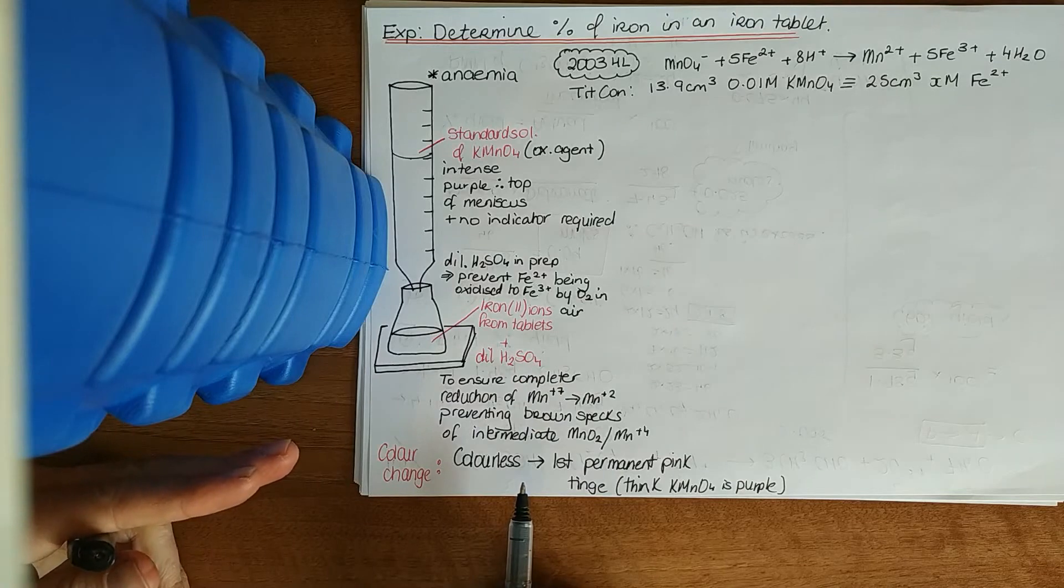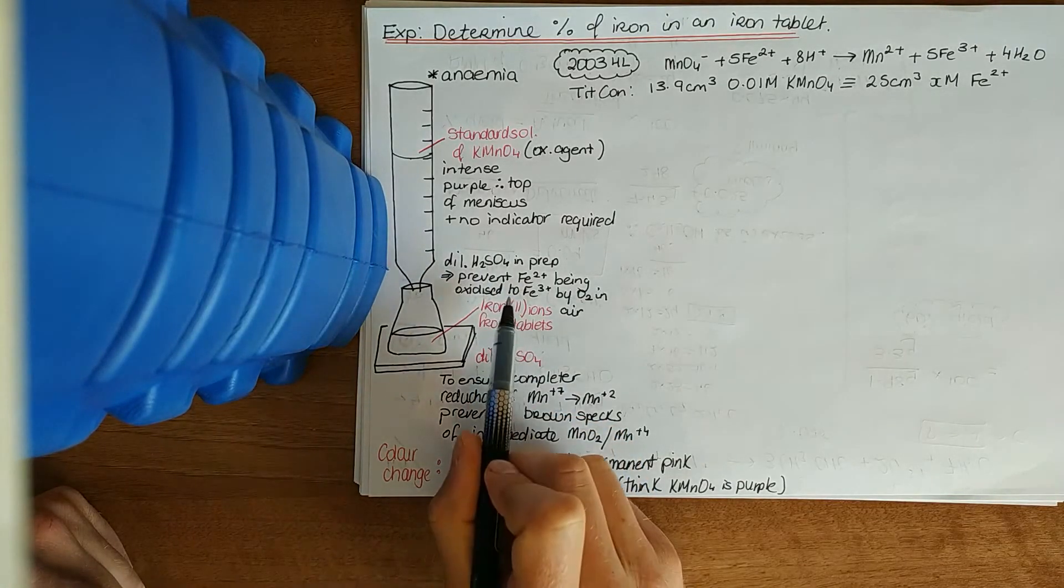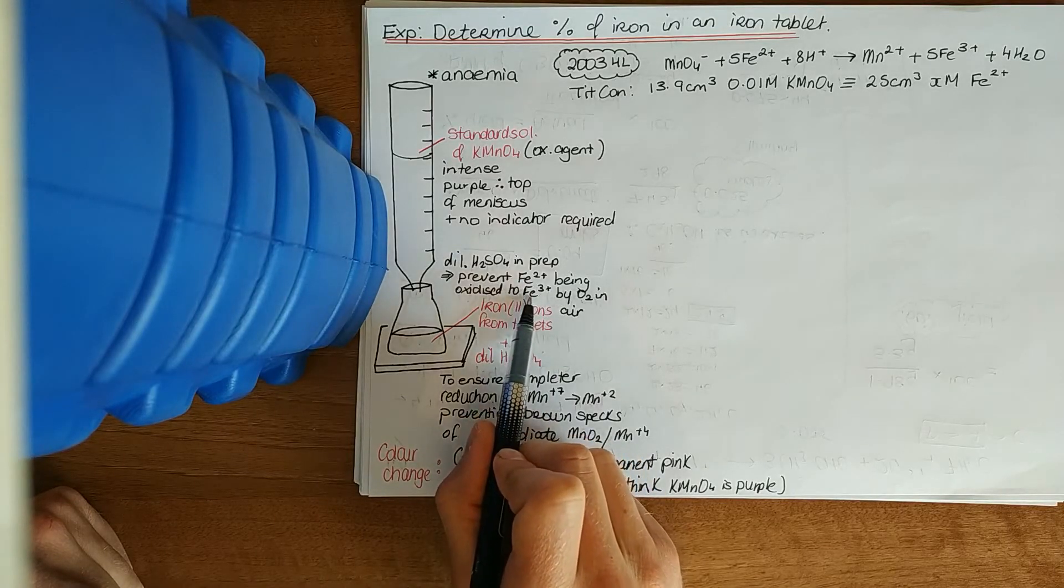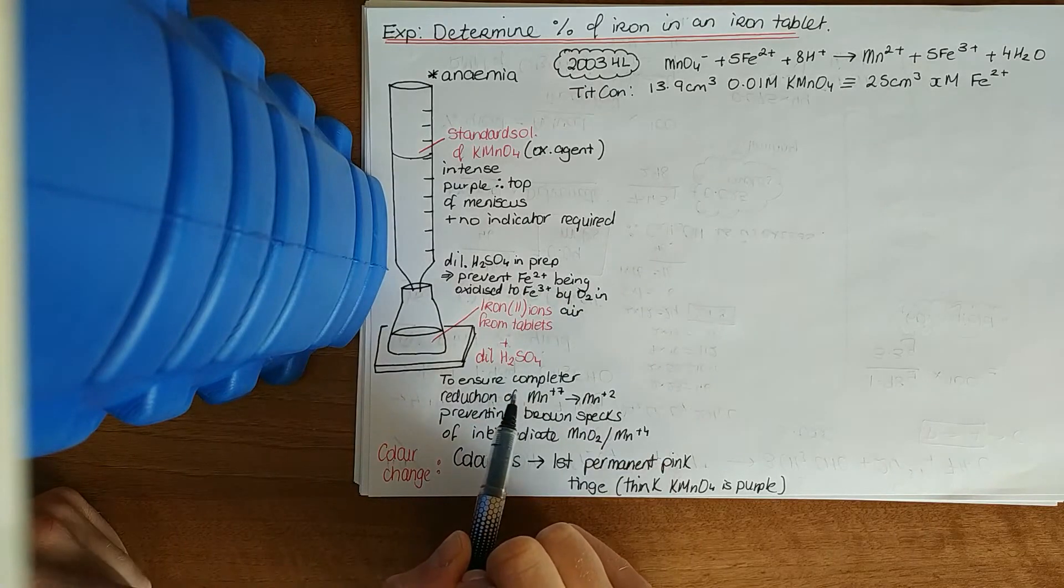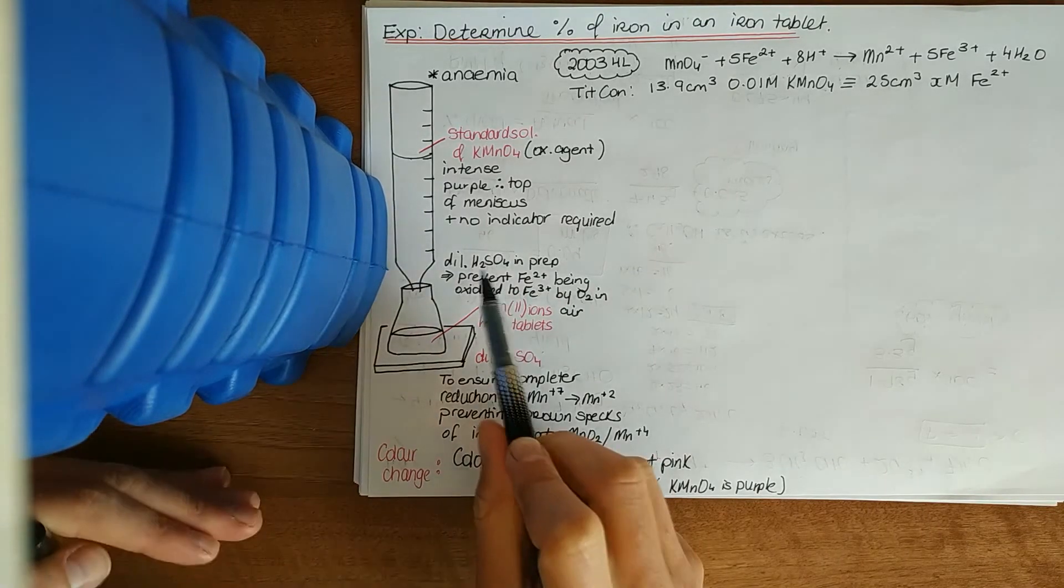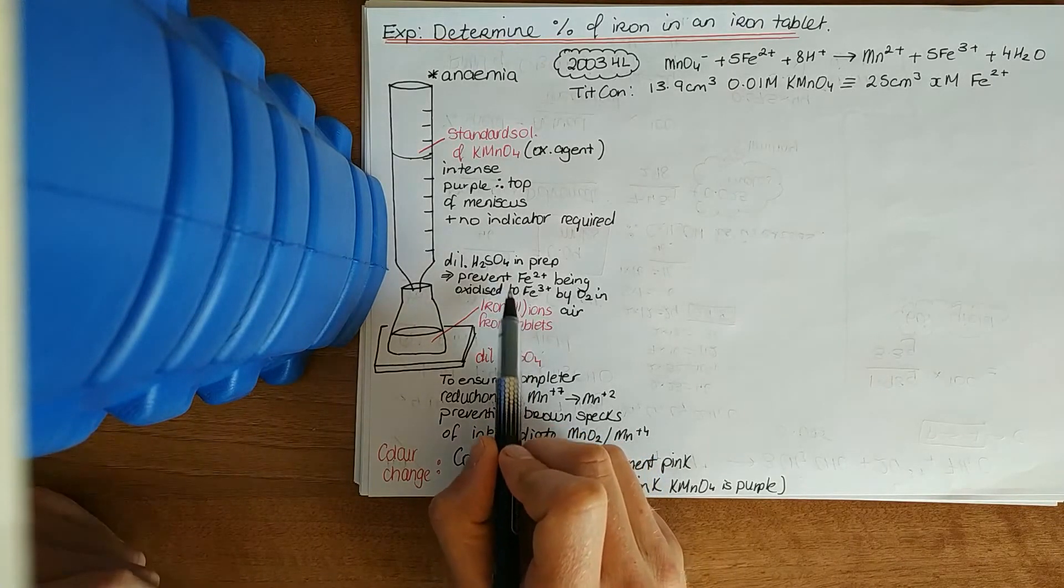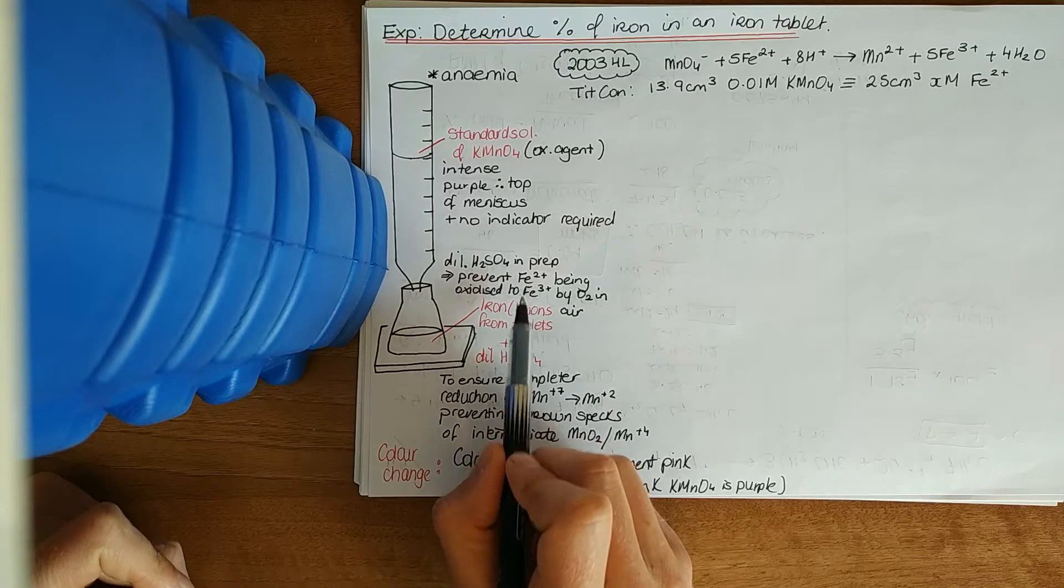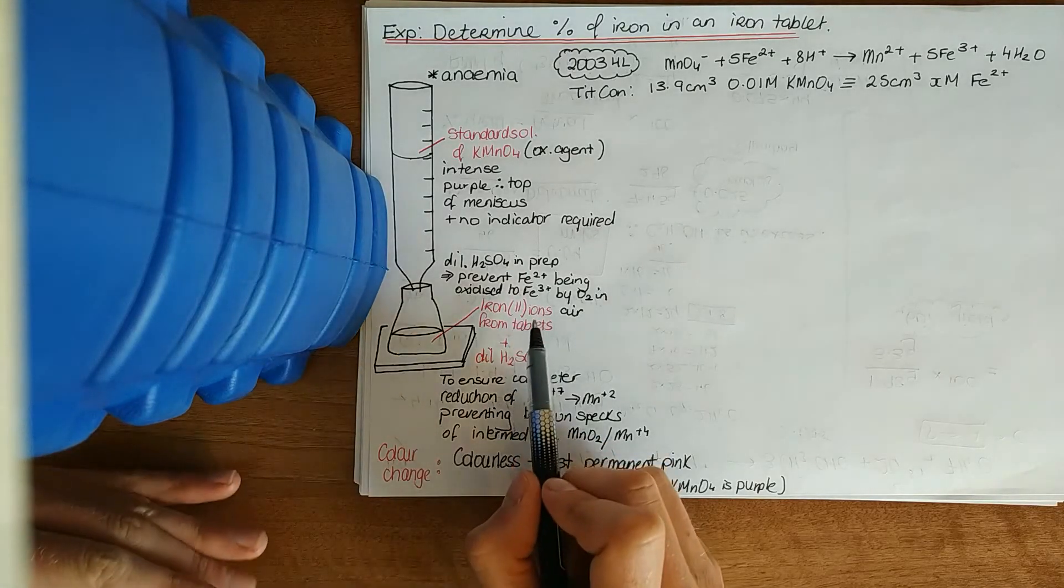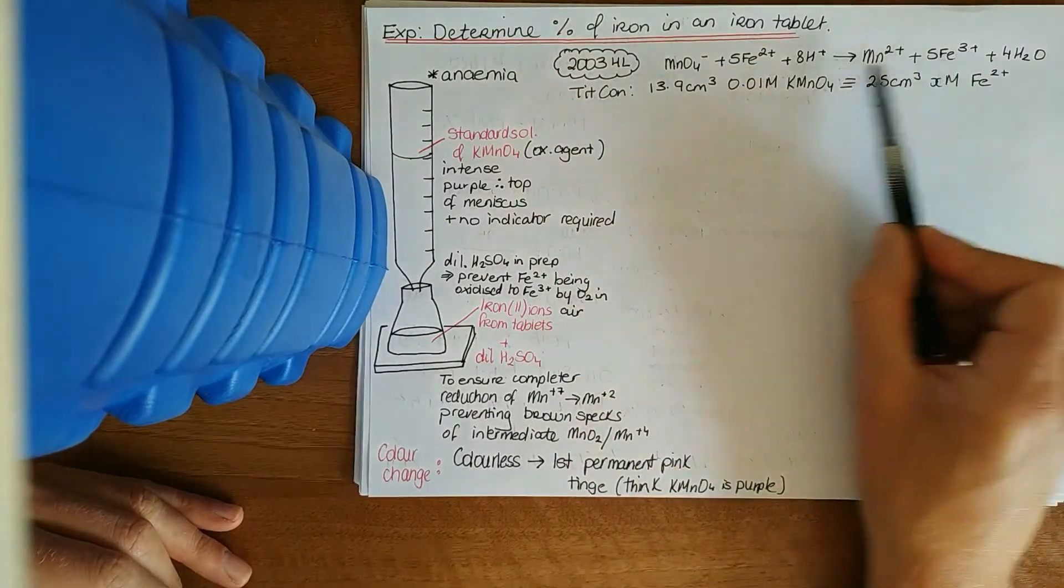There's two reasons in this experiment for H2SO4 being added. The first one is to prevent early oxidation of Fe2+ to Fe3+ by oxygen in the air. Remember, oxidation is a loss of electrons or an increase in oxidation number.